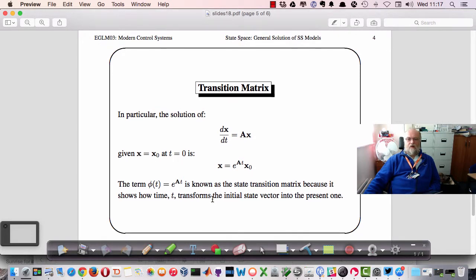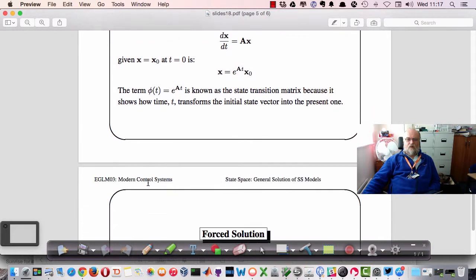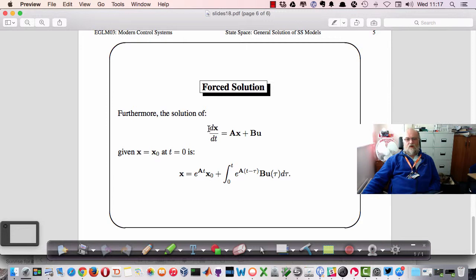In particular, the solution of dx by dt equals Ax given x equals x0 at t equals 0 is given by e to the At x0. And we know e to the At because it's the exponential function and that's the transition matrix. So we can use the diagonal form to get at that. Similarly, if we have a general system of equations dx/dt equals Ax plus Bu, we can solve that for the system by composing the response due to the initial conditions e to the At x0 and the integral e to the A times t minus tau Bu tau d tau. This is the convolution integral and this gives us the forced response.